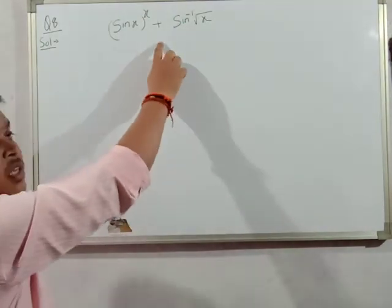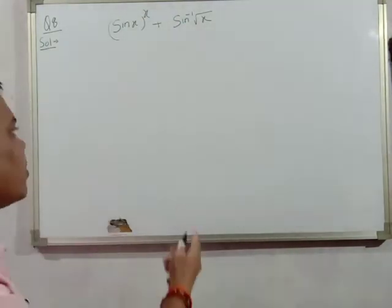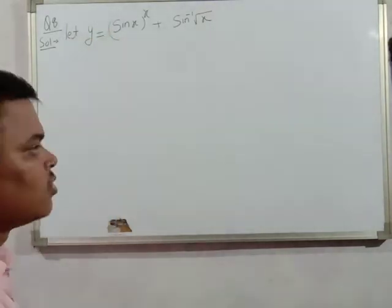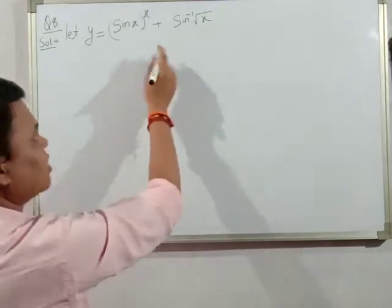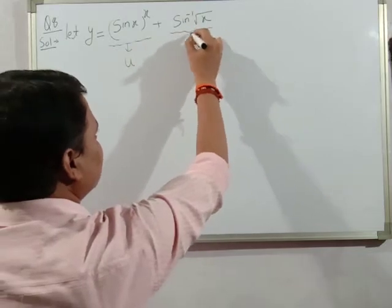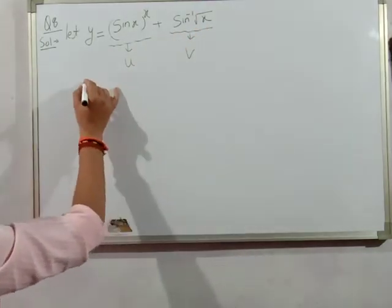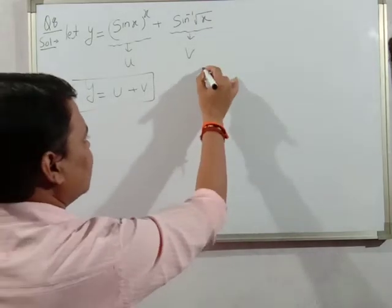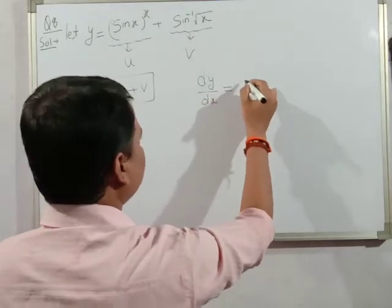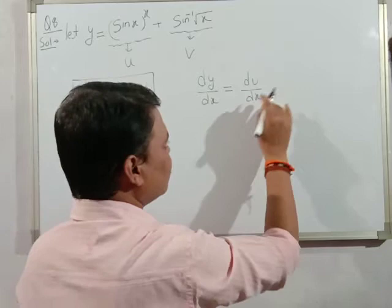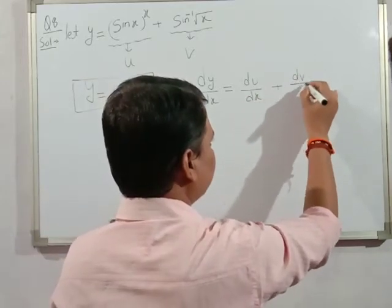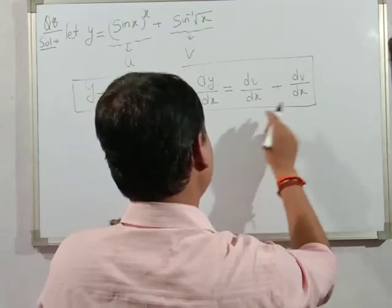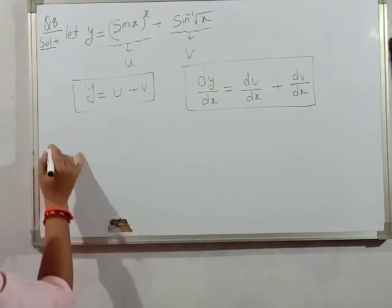Question number 8: sin(x) to the power x plus sin inverse of under root x. Let this equal to y. This is our first function and this is our second function. Let u equal the first function and v equal the second function, so y equals u plus v. We need to find the derivative of y with respect to x, which equals derivative of u with respect to x plus derivative of v with respect to x.